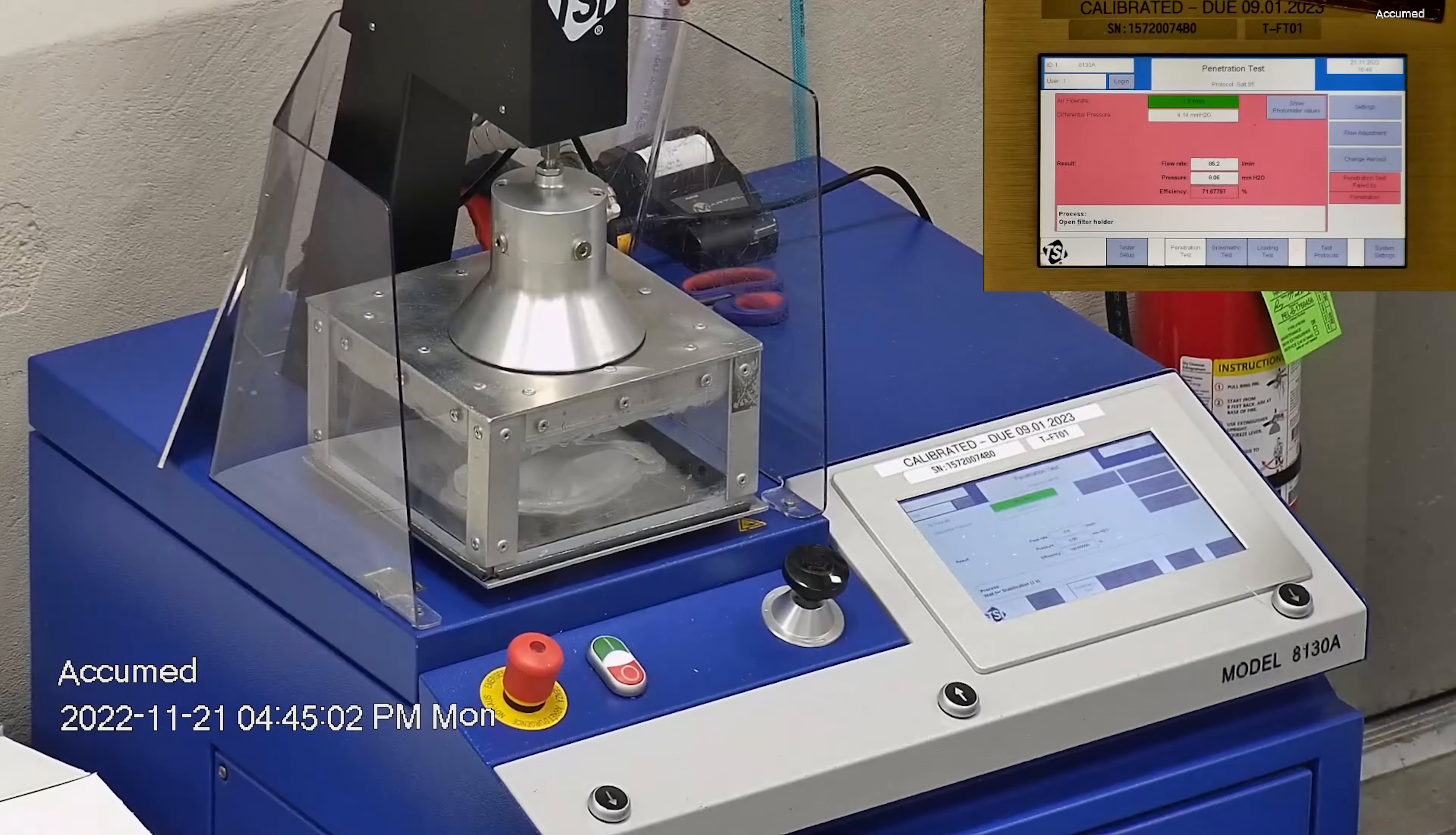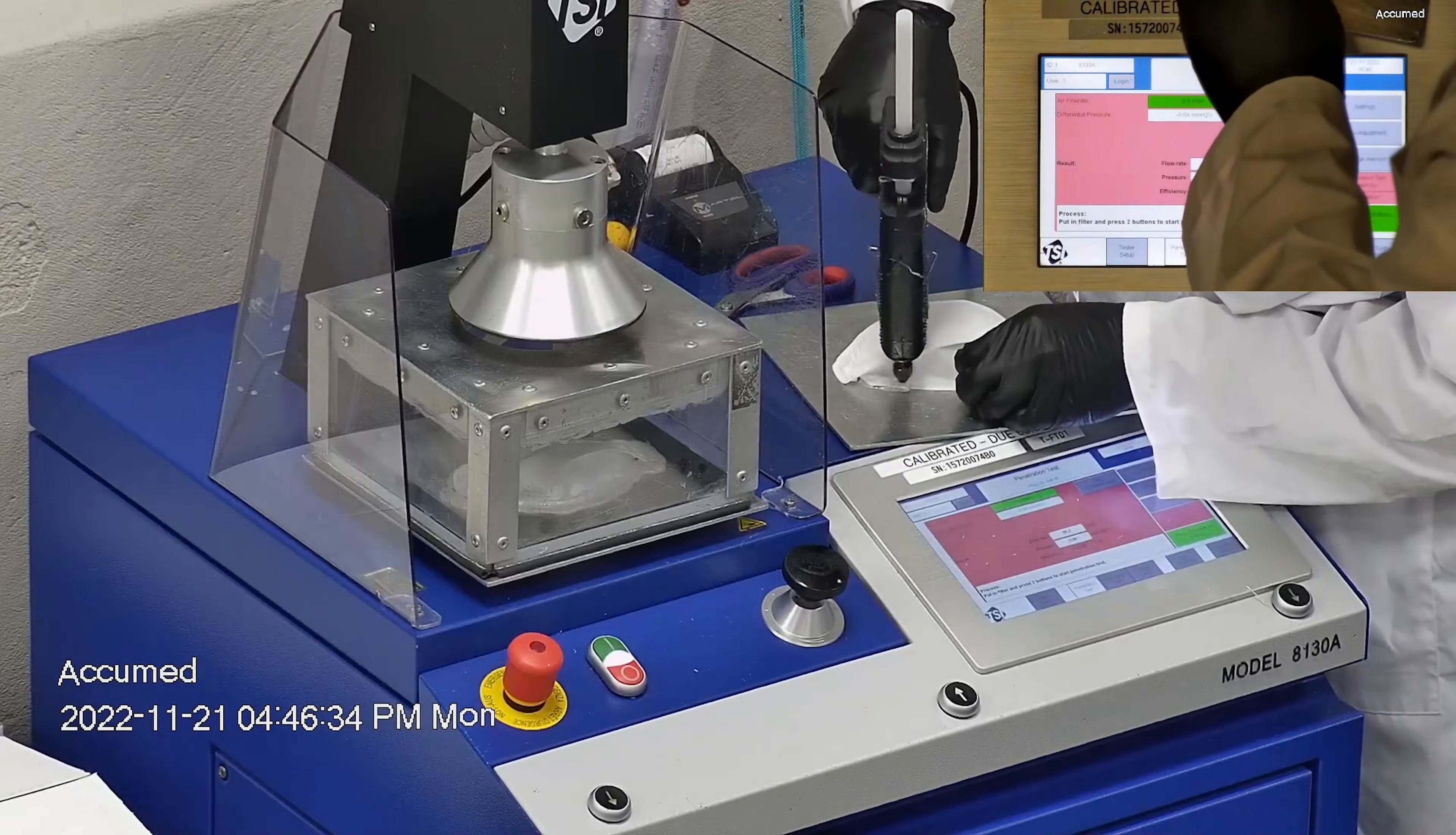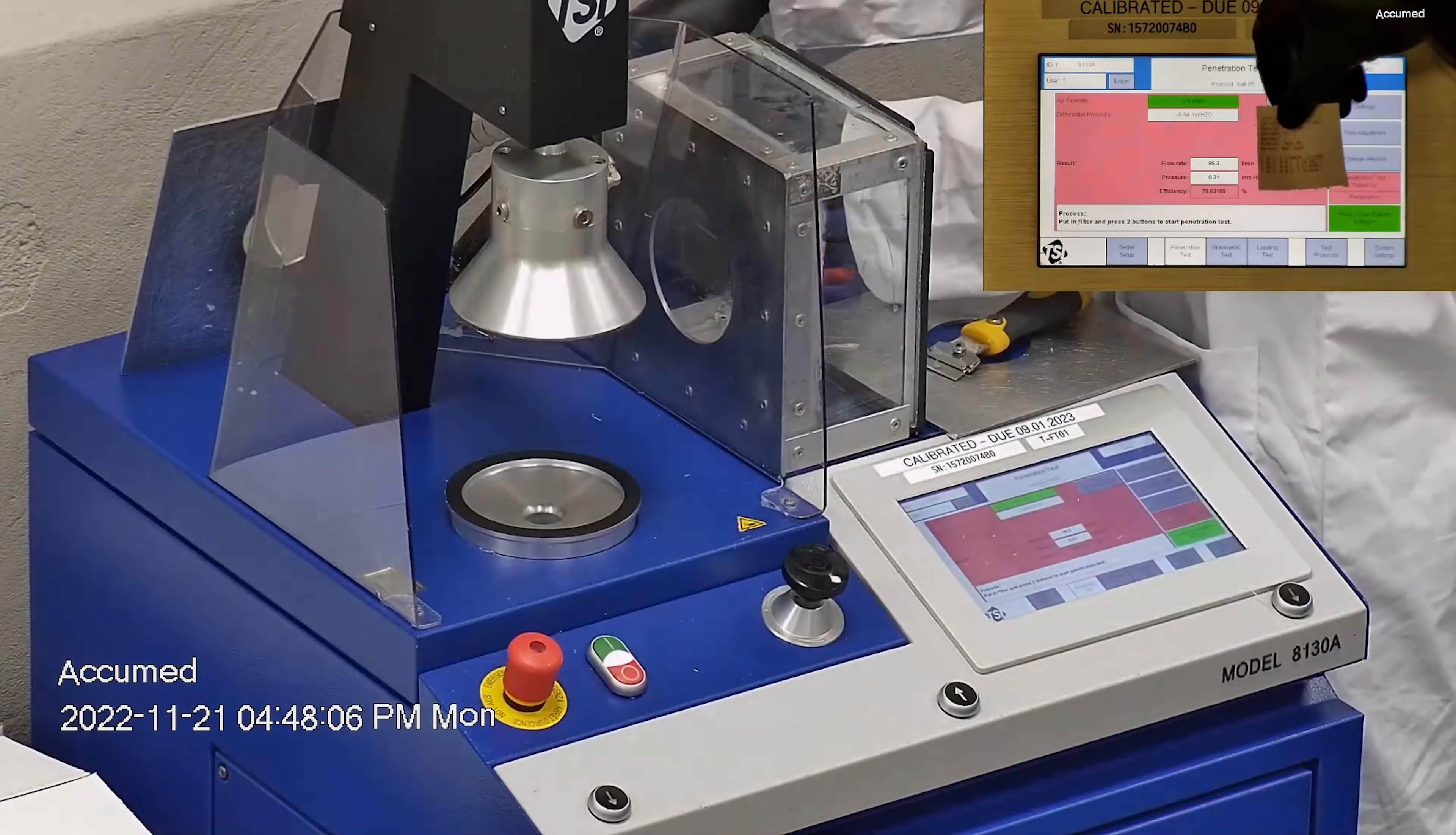The first sample had a filtration percentage of 79.7 with a pressure drop of 9.1 millimeters of water. The second sample had a filtration percentage of 71.6 with a pressure drop of 8.1 millimeters of water. The last sample had a filtration percentage of 79.6 with a pressure drop of 8.3 millimeters of water.